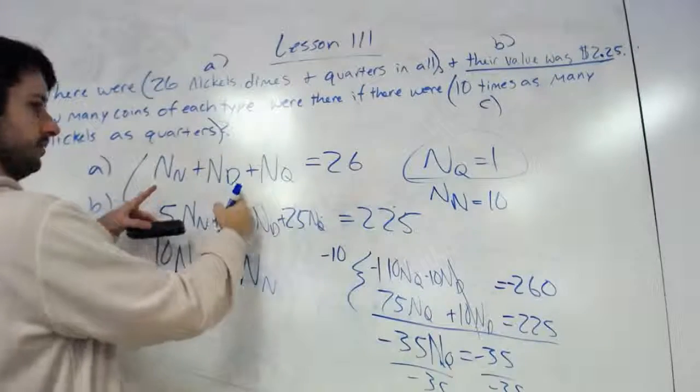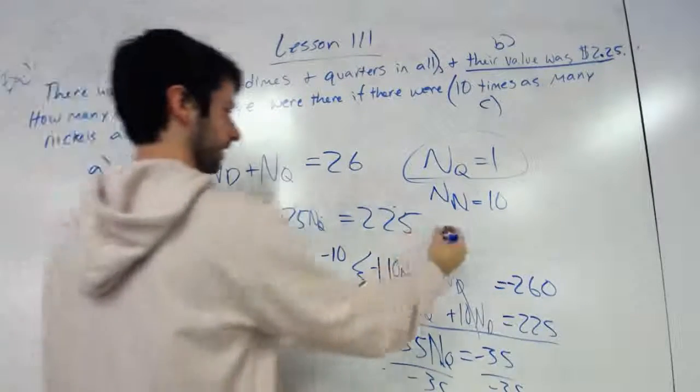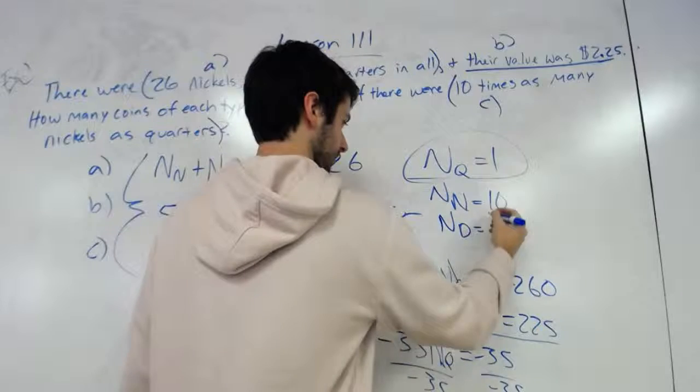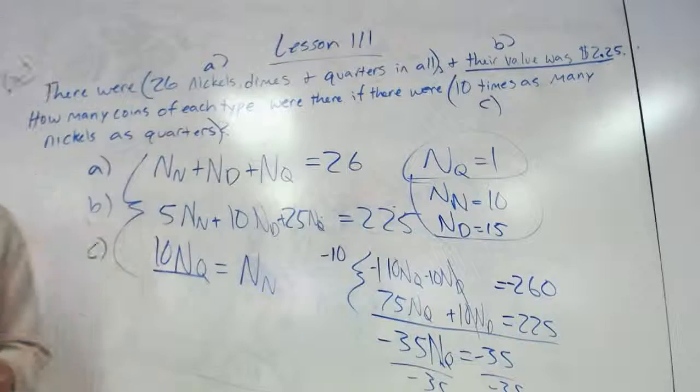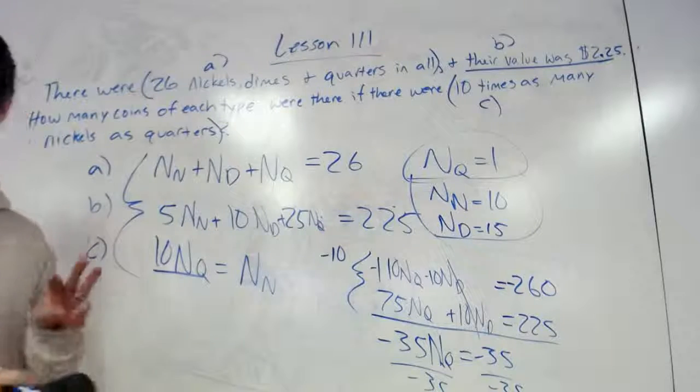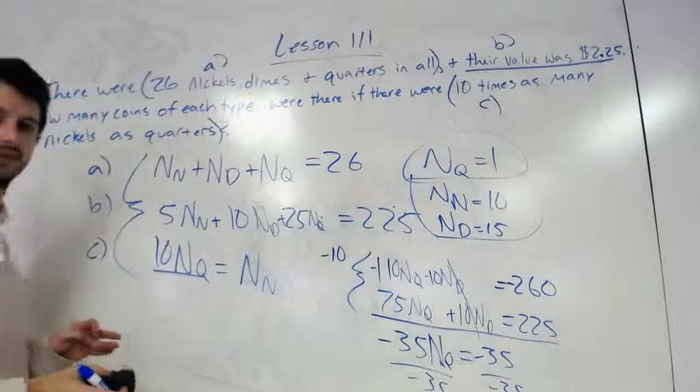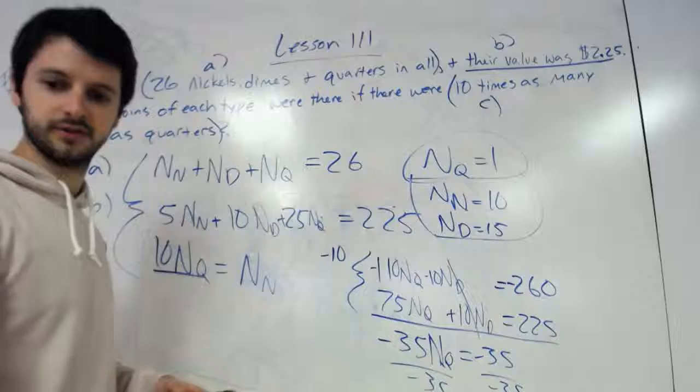Plug that in, so 10, 11, that means the number of dimes equals 15 when I plug all that in. So anyways, that's how you do three systems or three statements of equalities and that's lesson 111.